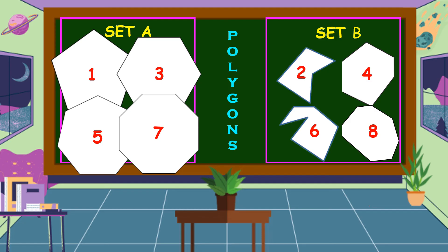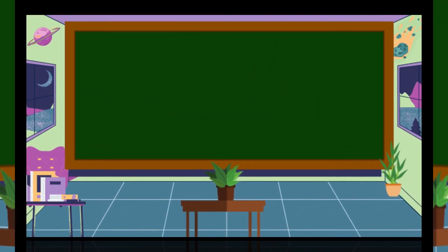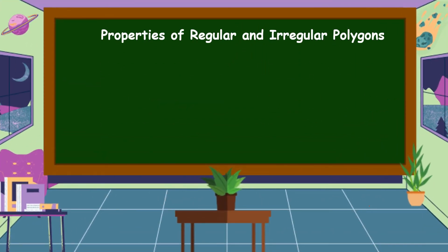Now look at the polygons in set B. They don't have the same length and angles. If the sides and angles of a polygon are not the same, it is an irregular polygon. Therefore, the polygons in set B are irregular polygons.